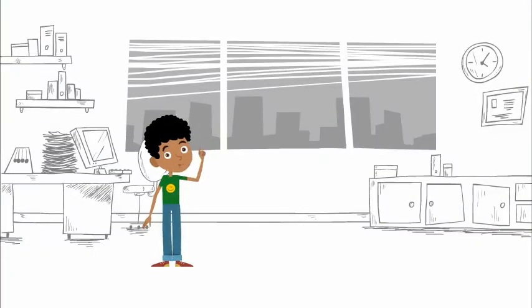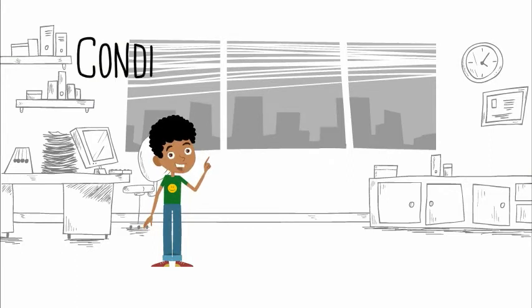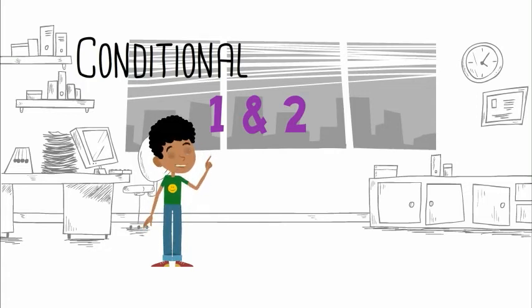Hello and welcome. Today I want to talk to you about conditional one and two. What is a conditional? You use a conditional to talk about something that will only happen if something else is true or happens, and you always use if.